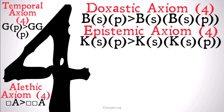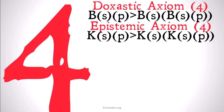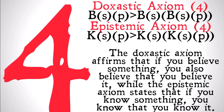Doxastic and epistemic logic are going to have similar axioms. They're going to look like this: if S believes that P, then S believes that S believes that P. If S knows that P, that means S knows that S knows that P. While doubling possibility or obligation may not make much intuitive sense, the duplication of belief or knowledge seems relatively intuitive, at least in its meaning. We can understand what it means to believe that you believe something, or to know that you know something, or not know that you know something. The doxastic axiom affirms that if you believe something, you also believe that you believe it, and on down the line. The epistemic axiom states that if you know something, you know that you know it.